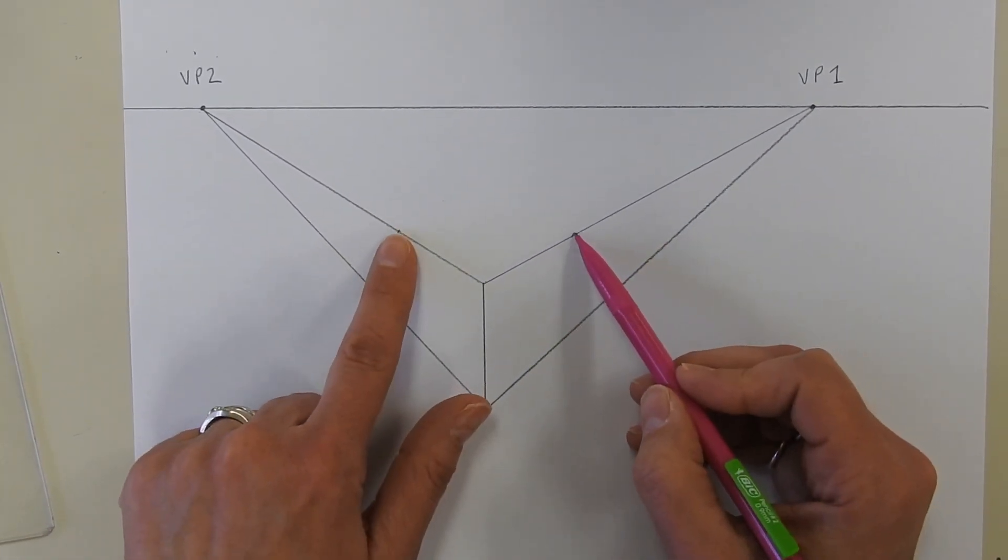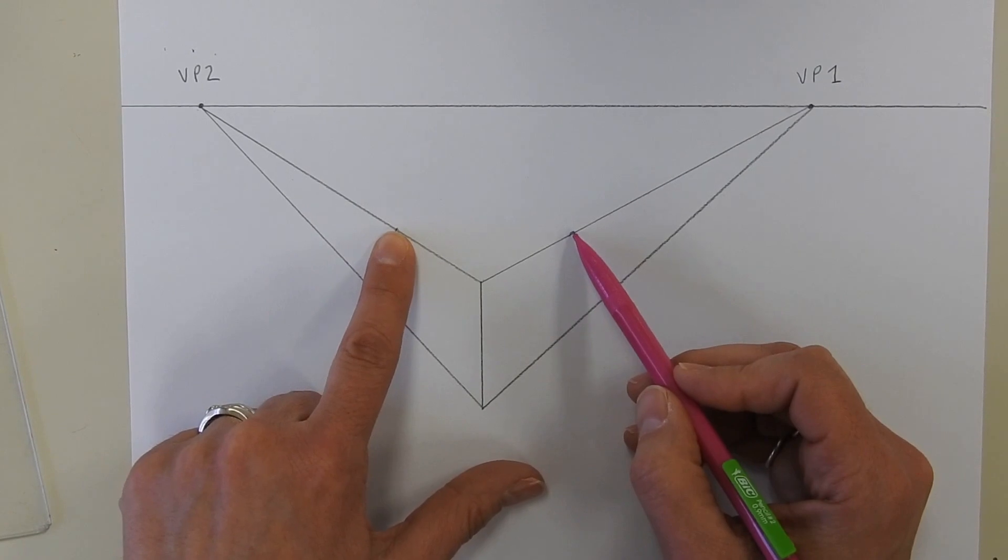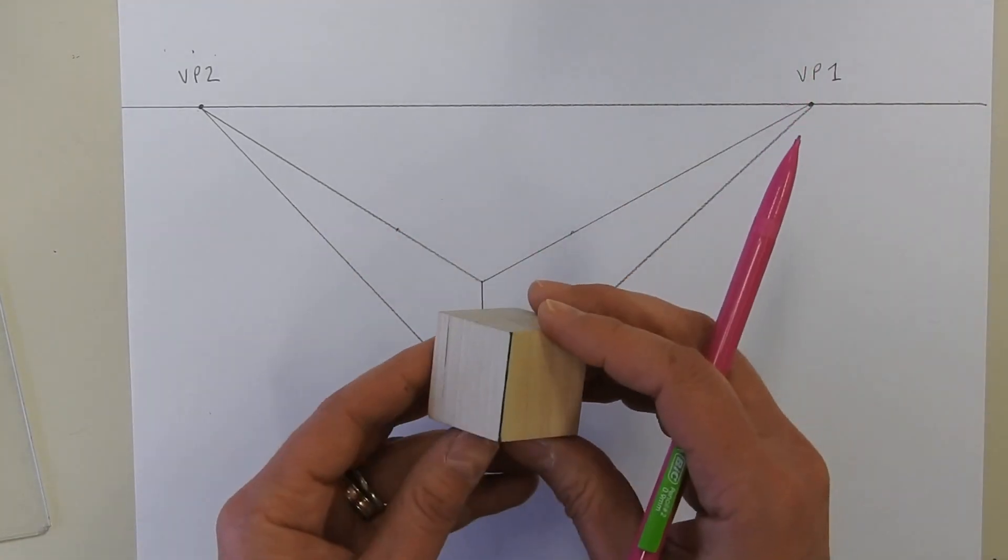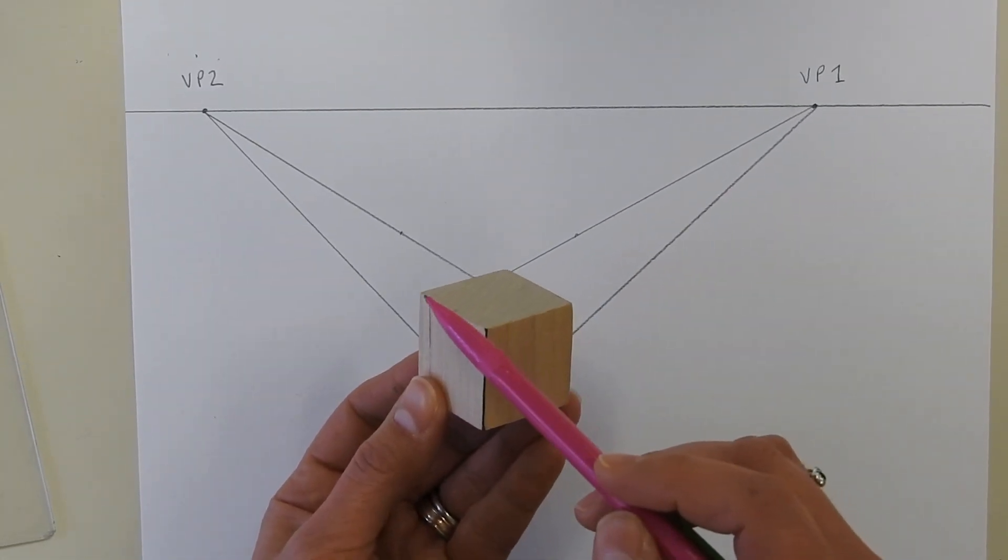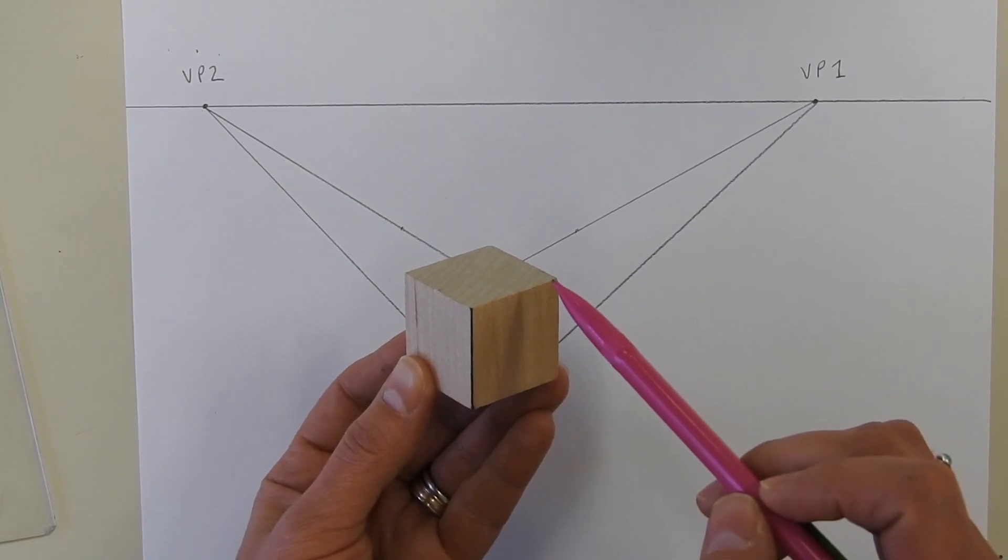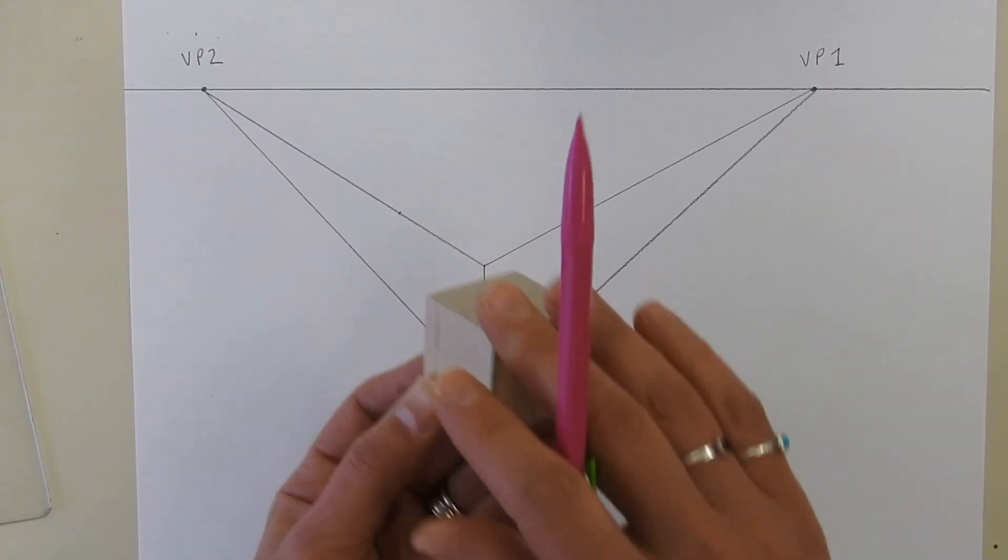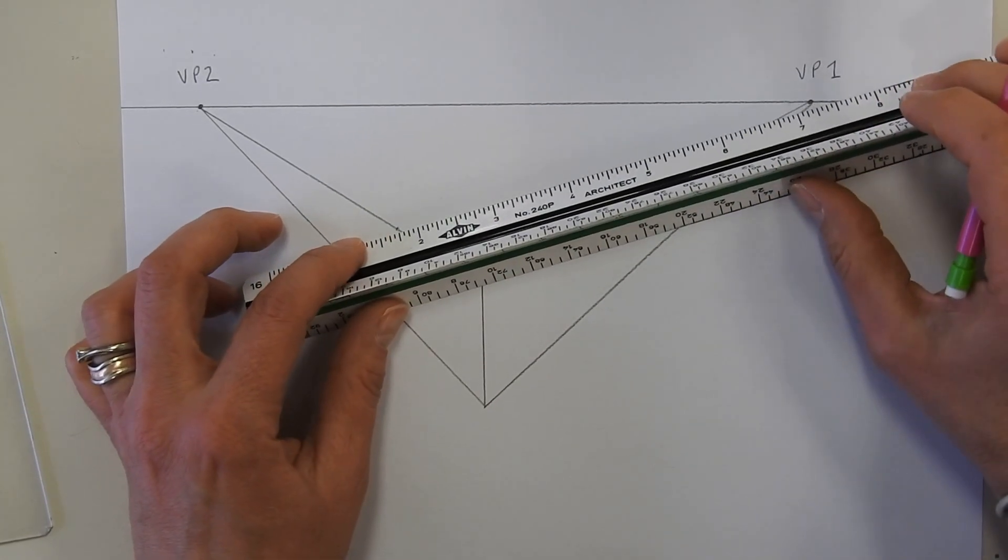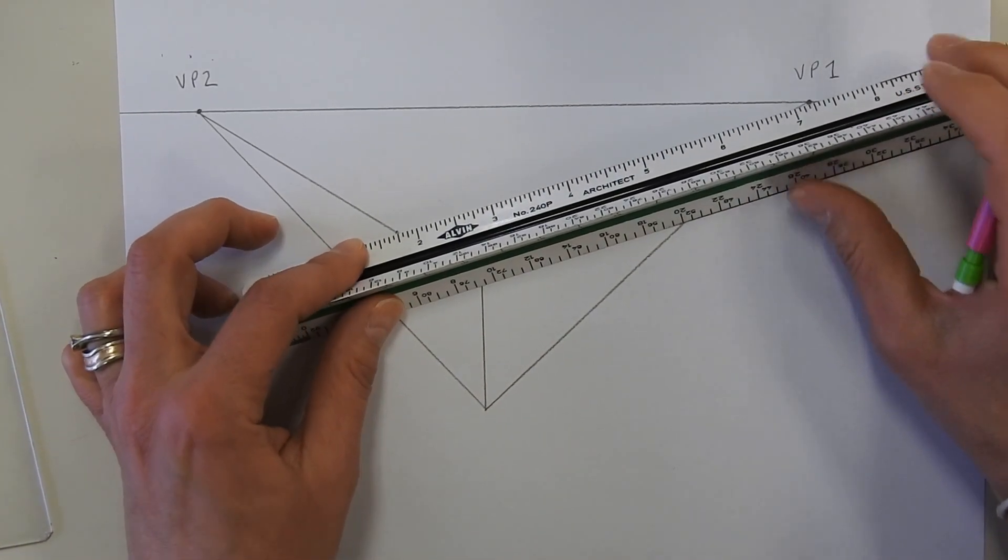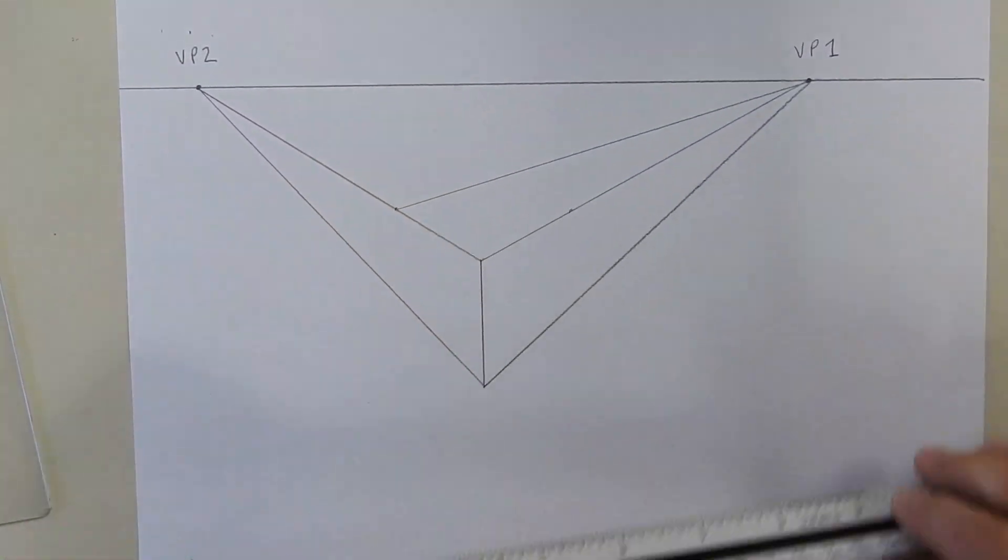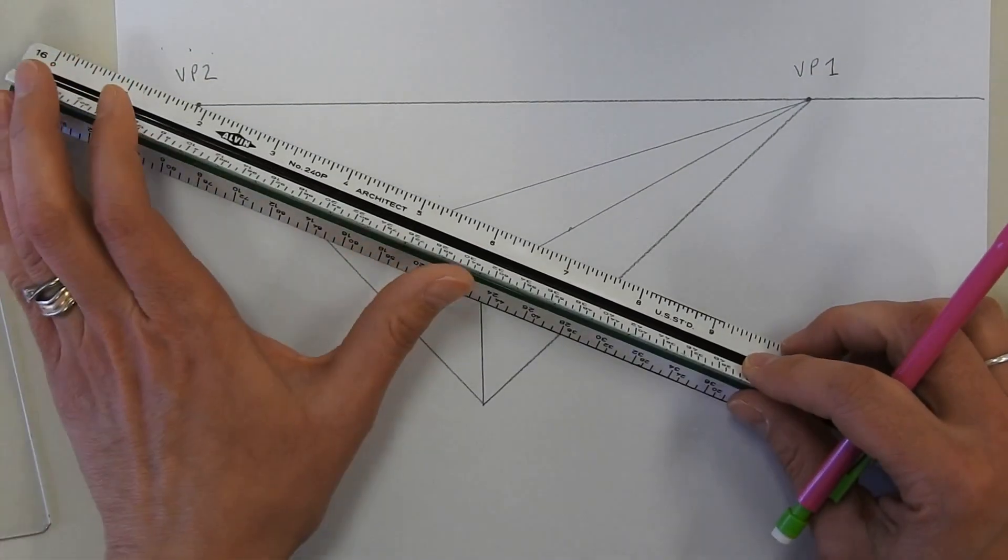Now, these two here are going to go back to the vanishing point, only they're going to go to the opposite vanishing point. So if you think about this cube and you imagine this line here, it's going to go to the opposite vanishing point. And this one here to the opposite. So we'll take our ruler, line it up, go to the opposite vanishing point there, and then the same thing over here.